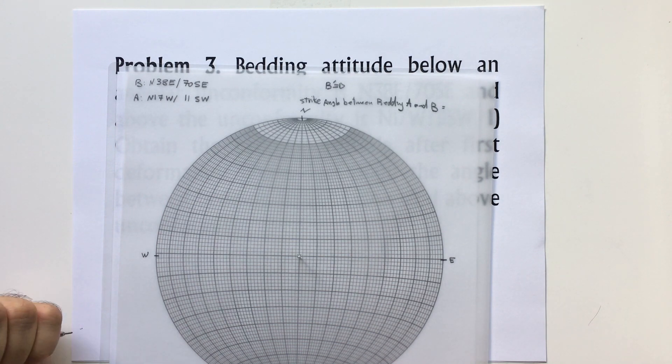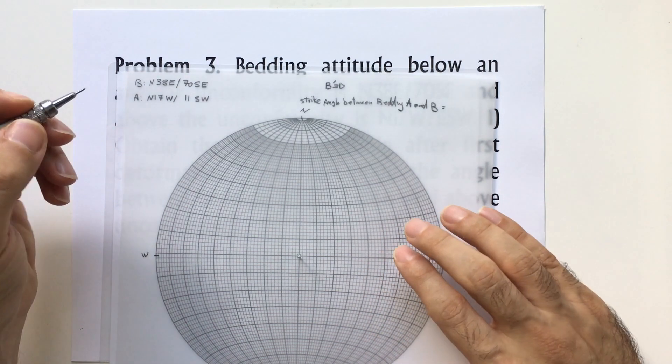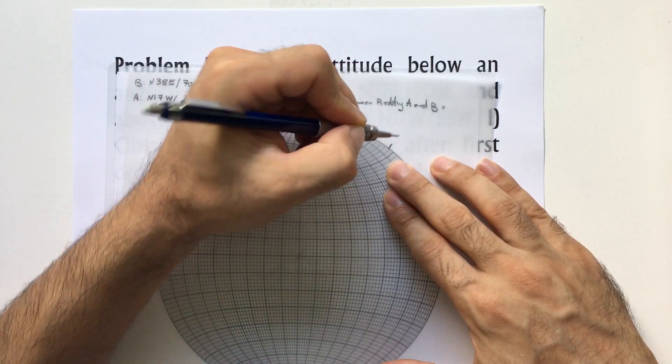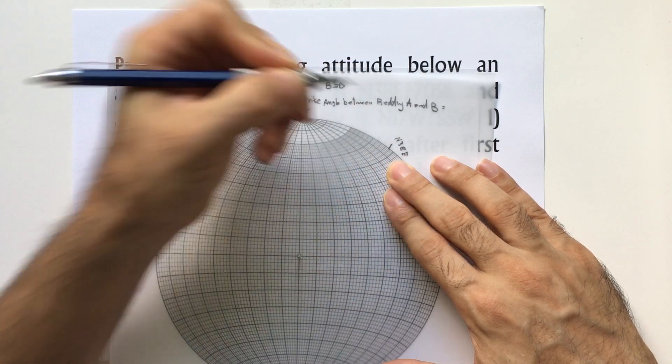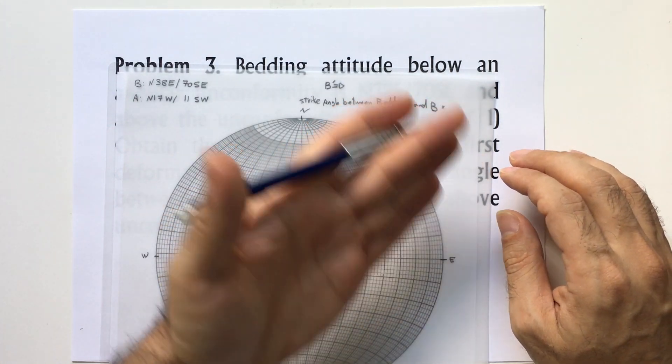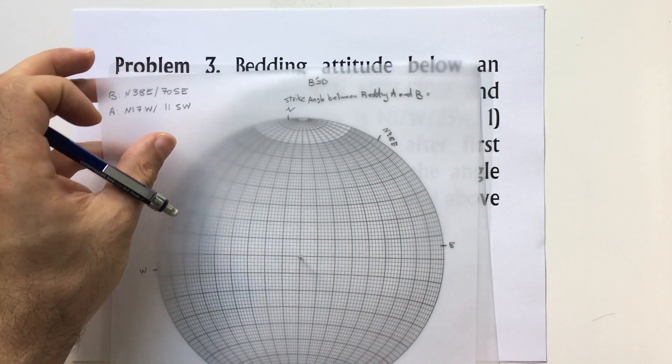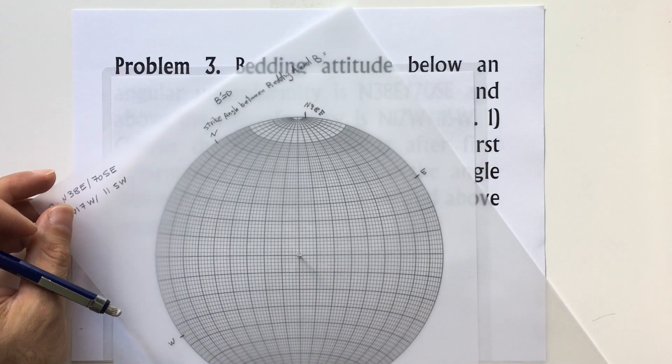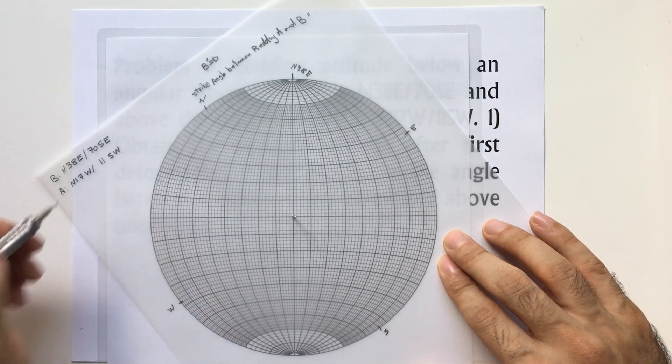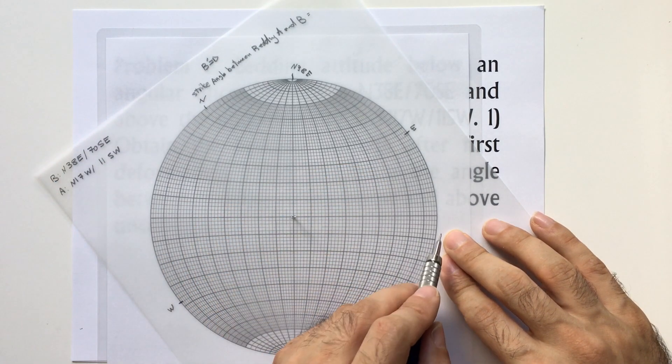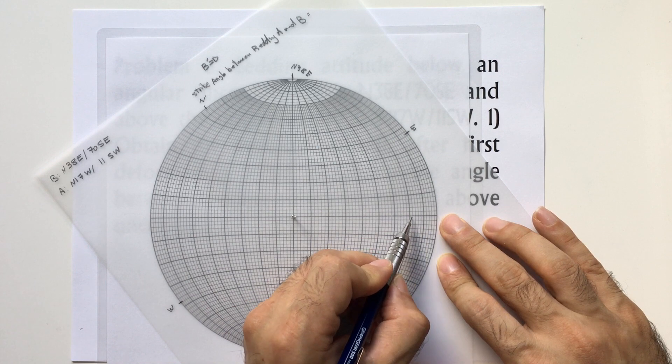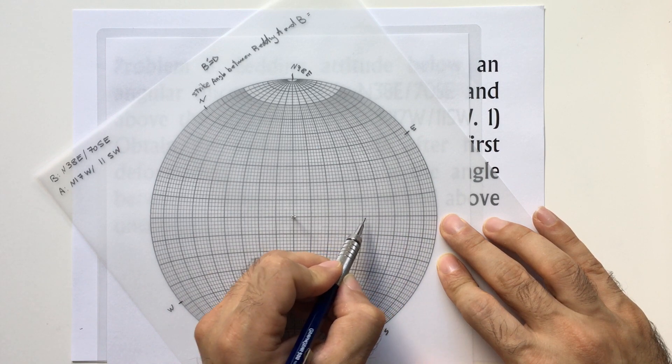Below the unconformity it's north 38 east, 10, 20, 30, 38. North 38 east is dipping towards southeast, so I rotate my vellum paper to this point and I will count 70 degrees from southeast along the west-east line: 10, 20, 30, 40, 50, 60, 70.